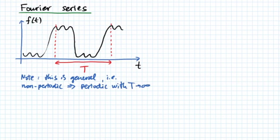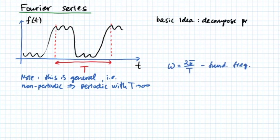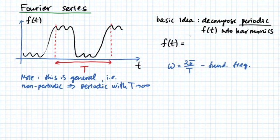The basic idea is to decompose periodic function f of t into harmonics with fundamental frequency given by 2π over period T. In other words, we seek to write f of t as a sum of C sub n times e to the i n omega t, where n varies from minus infinity to plus infinity, an integer. Omega in this expression is the fundamental frequency.